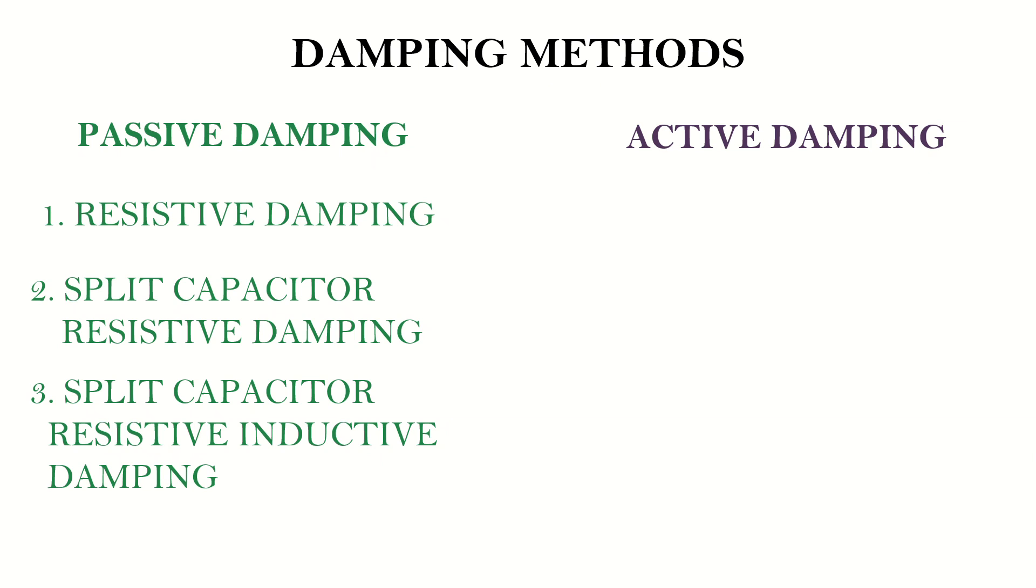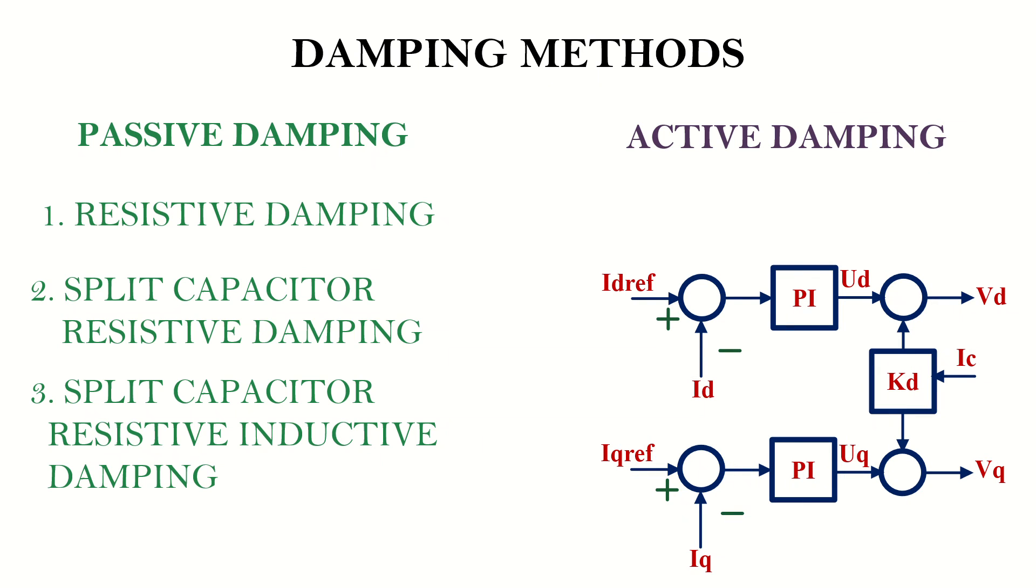Similar to passive damping, active damping also adjusts impedance, not physically but through virtual means. To achieve this, the control structure needs modification, and this approach is generally referred to as the virtual resistance damping method.